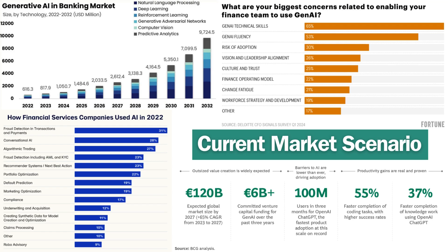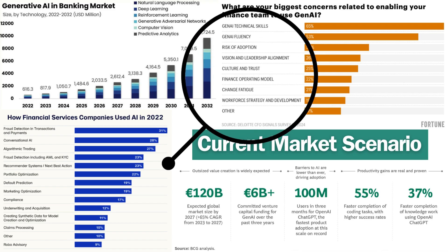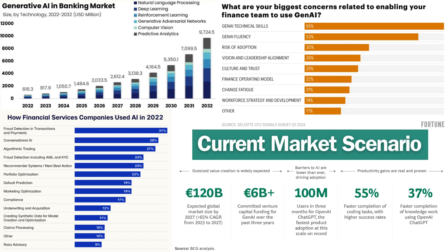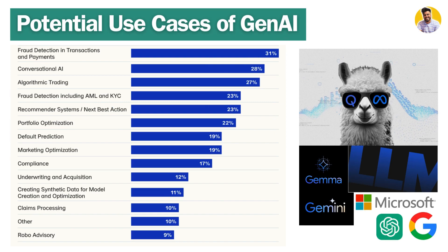These are trends happening right now. We can see the use cases of Gen AI and LLMs in the finance domain, with big concerns from finance teams around generative AI technical skills, Gen AI fluency, risk adaptation, and vision and leadership alignment. The current market scenario is very exciting — many companies are applying Gen AI to finance, including fraud reduction in transactions, chatbots, algorithmic trading, recommendation systems, portfolio optimization, default prediction, underwriting, and more.